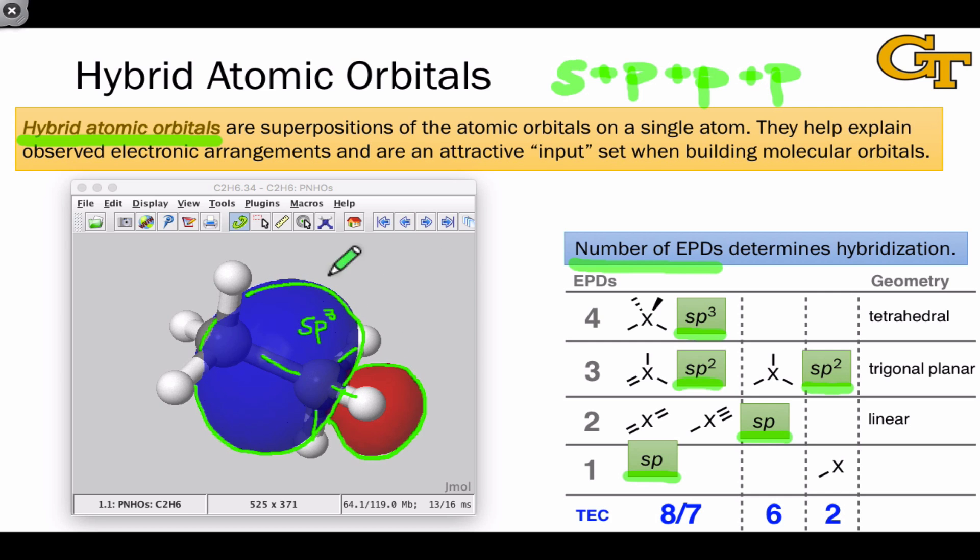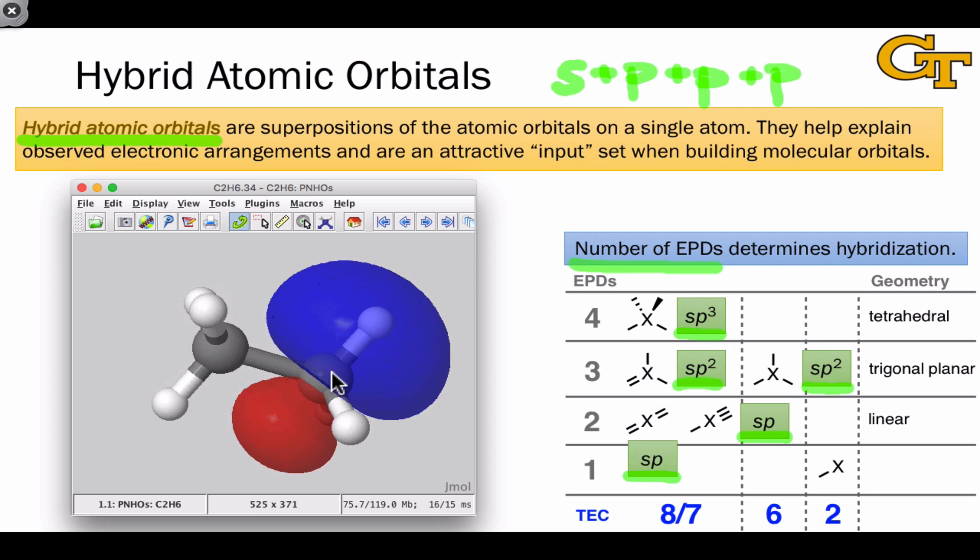As we'll see in a bit, overlapping of the hybrids produces the localized molecular orbitals that we're going to identify in bonds within organic structures. We also see hybrids aligned along the bonds to the hydrogens, and these also participated in bonding by overlapping with 1s orbitals on the hydrogen atoms.